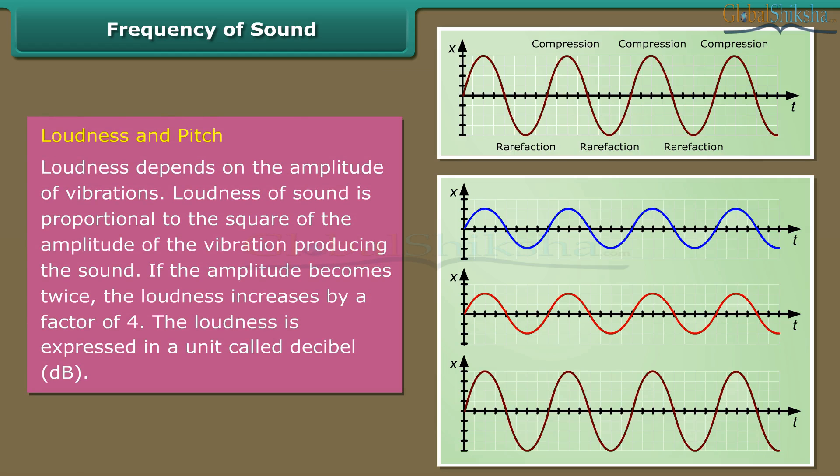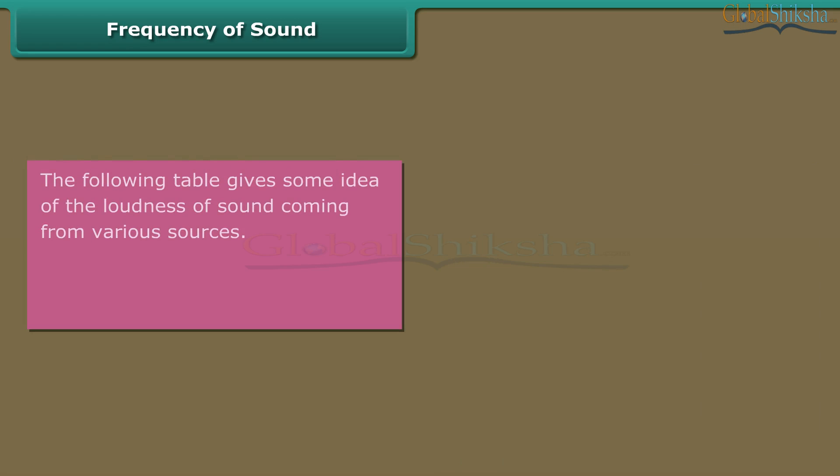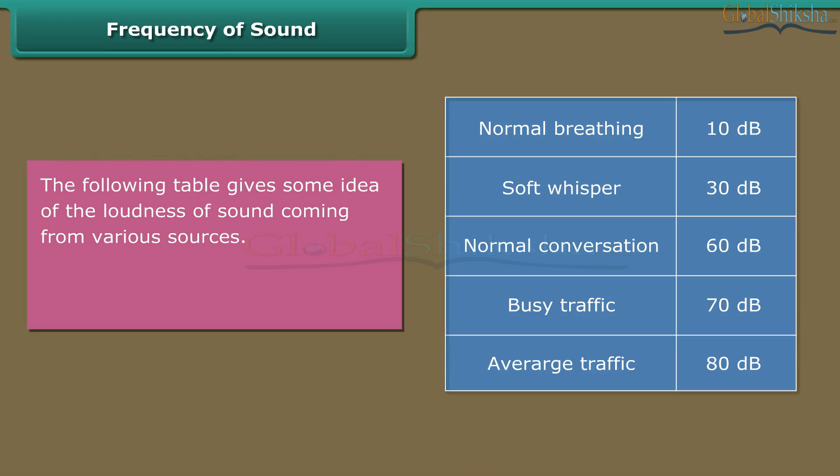Loudness and pitch. Loudness depends on the amplitude of vibrations. Loudness of sound is proportional to the square of the amplitude of the vibration producing the sound. If the amplitude becomes twice, the loudness increases by a factor of four. The loudness is expressed in a unit called decibel dB. The following table gives some idea of the loudness of sound coming from various sources. Above 80 dB, the noise becomes physically painful.